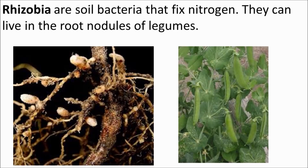Nitrogen gas can also be converted to nitrate compounds by nitrogen-fixing bacteria. These bacteria live in the soil or in root nodules — little swellings on roots. They can live in the root nodules of leguminous plants, or legumes, such as peas, beans, and clover. These plants are fantastic for adding nitrogen to the soil. If your soil is lacking nutrients, legumes are perfect.